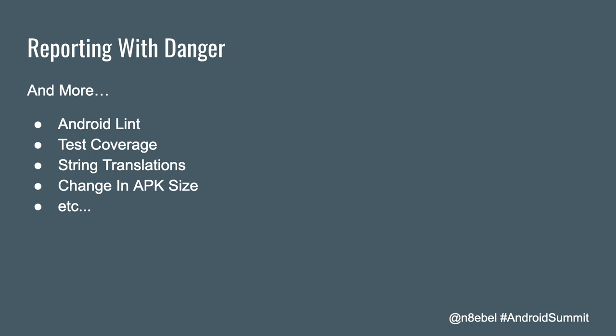That's just a subset of what you can do with Danger and your PRs. There's a lot of other stuff you could do — run checks with Android Lint, add test coverage checks, create a task to look for string translation changes, or monitor changes in APK size. There's a lot of potential here, and I really encourage you to think about what types of checks or messages you might be able to add to your project to make it more effective.